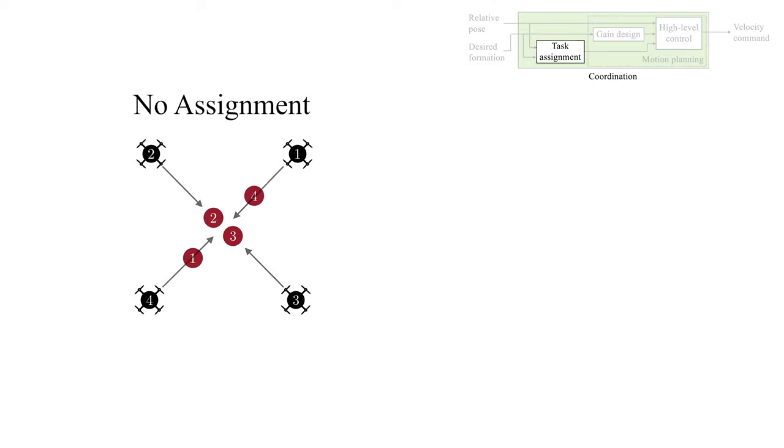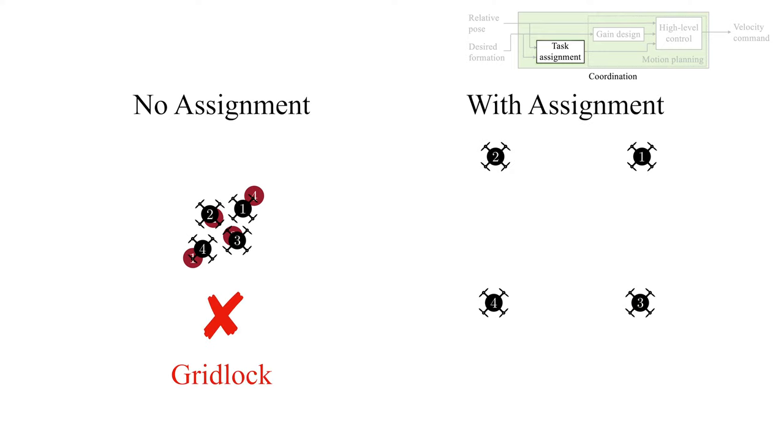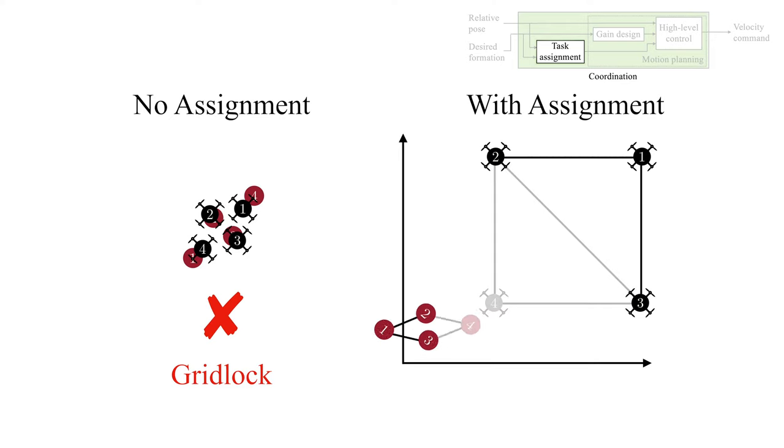Distributed collision avoidance is known to cause gridlocks. To address this issue, we present a task assignment strategy in which each vehicle first aligns the dispatch formation to itself and its neighbors using its local knowledge. The vehicle then finds a conflict-free assignment by auctioning with its neighbors.